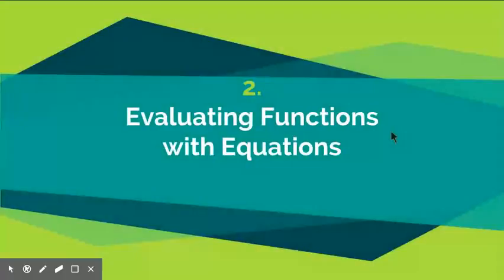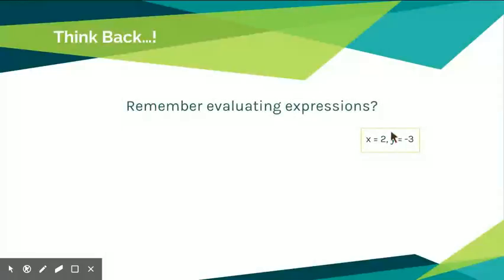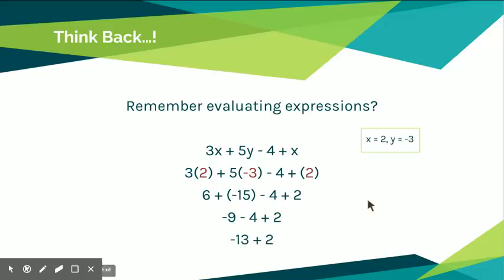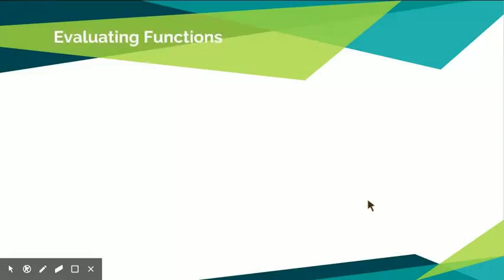Let's look at evaluating functions with equations. Think back to evaluating expressions — where you were given an expression, told what the variables represent, and had to substitute numbers in and simplify. For example, the 2 goes where the x's were and the negative 3 goes where the y was. 3 times 2 is 6, 5 times negative 3 is negative 15. 6 plus negative 15 is negative 9. Negative 9 minus 4 is negative 13. Negative 13 plus 2 is negative 11. If you're comfortable with this, today's notes will be straightforward.